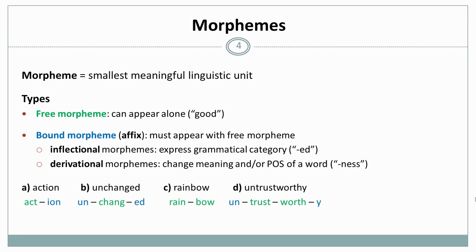And here are a few examples of words split into free and bound morphemes. Action, for example, consists of act, the free morpheme, and -ion, the bound morpheme. Unchanged consists of bound morpheme un-, change is the free morpheme, and -ed is the bound morpheme. Rainbow consists of two free morphemes, rain and bow. And untrustworthy consists of the bound morpheme un-, the free morphemes trust and worth, and the bound morpheme -y.